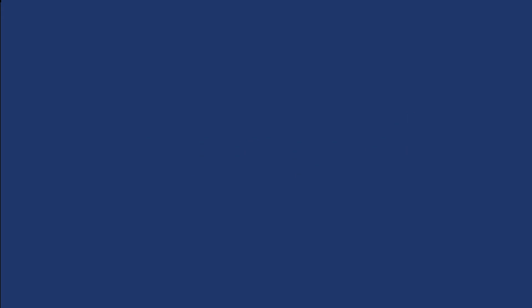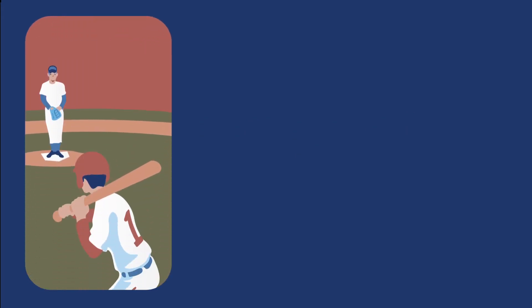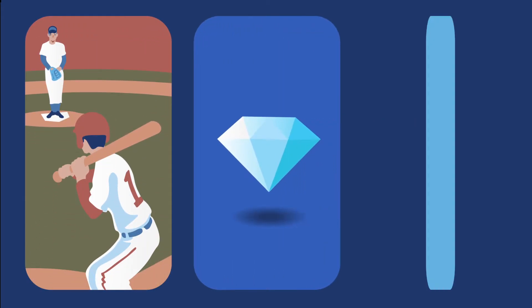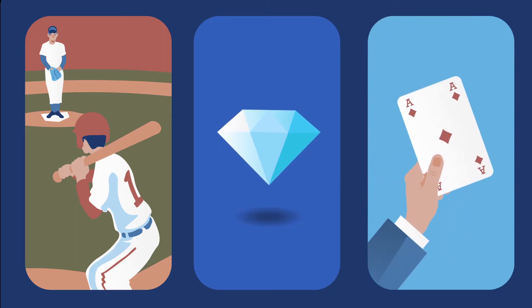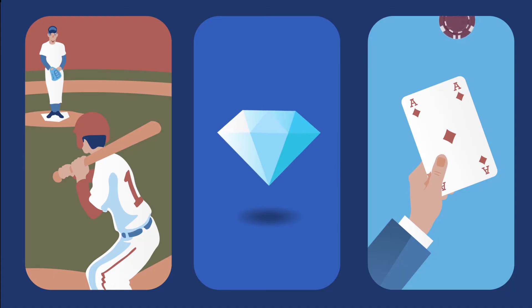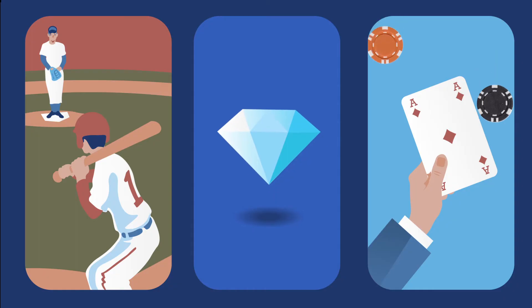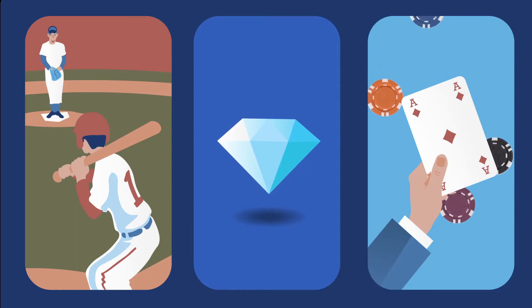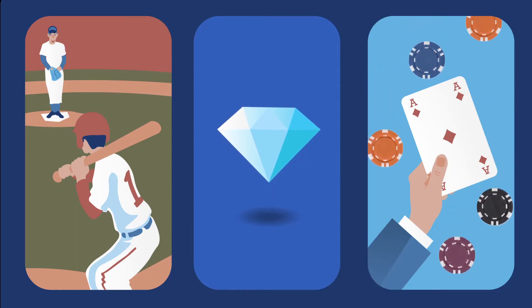the study of meaning. For example, the word diamond can have a very different meaning depending on the context, such as when used by a baseball player, a jeweler, or a poker player. Determining which one is applicable for a given situation can be difficult for humans, let alone computers.